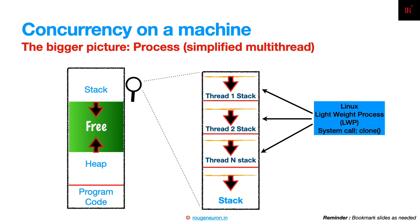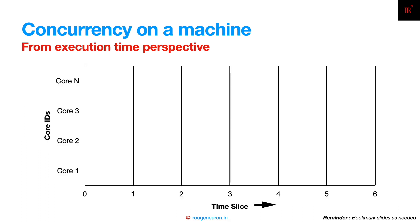The system call used in Linux to create threads is `clone`, not the typical `fork` command, which generates a completely new process. That's where the notion of 'lightweight' comes in — there is sharing between the original process and the new thread that gets spawned.